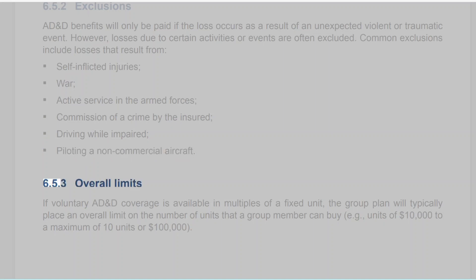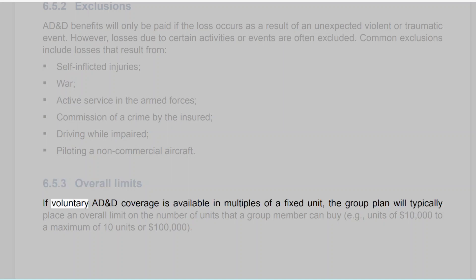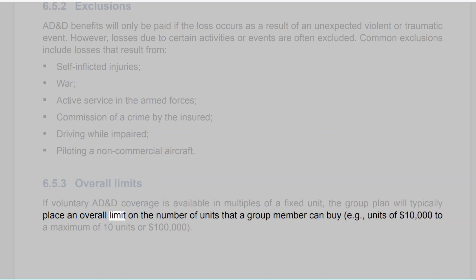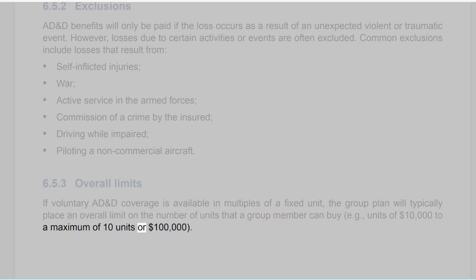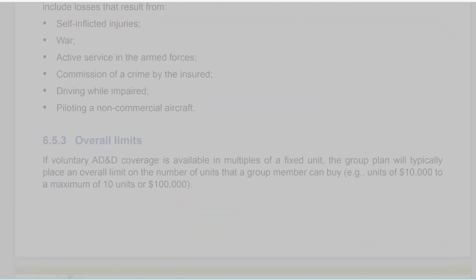6.5.3 Overall Limits. If voluntary AD&D coverage is available in multiples of a fixed unit, the group plan will typically place an overall limit on the number of units that a group member can buy — for example, units of $10,000 to a maximum of 10 units or $100,000.